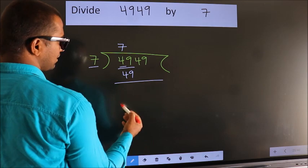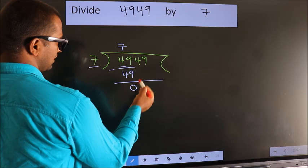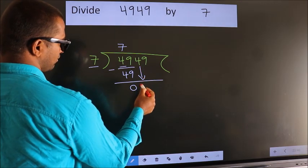Now we should subtract. We get 0. After this, bring down the beside number. So 4 down.